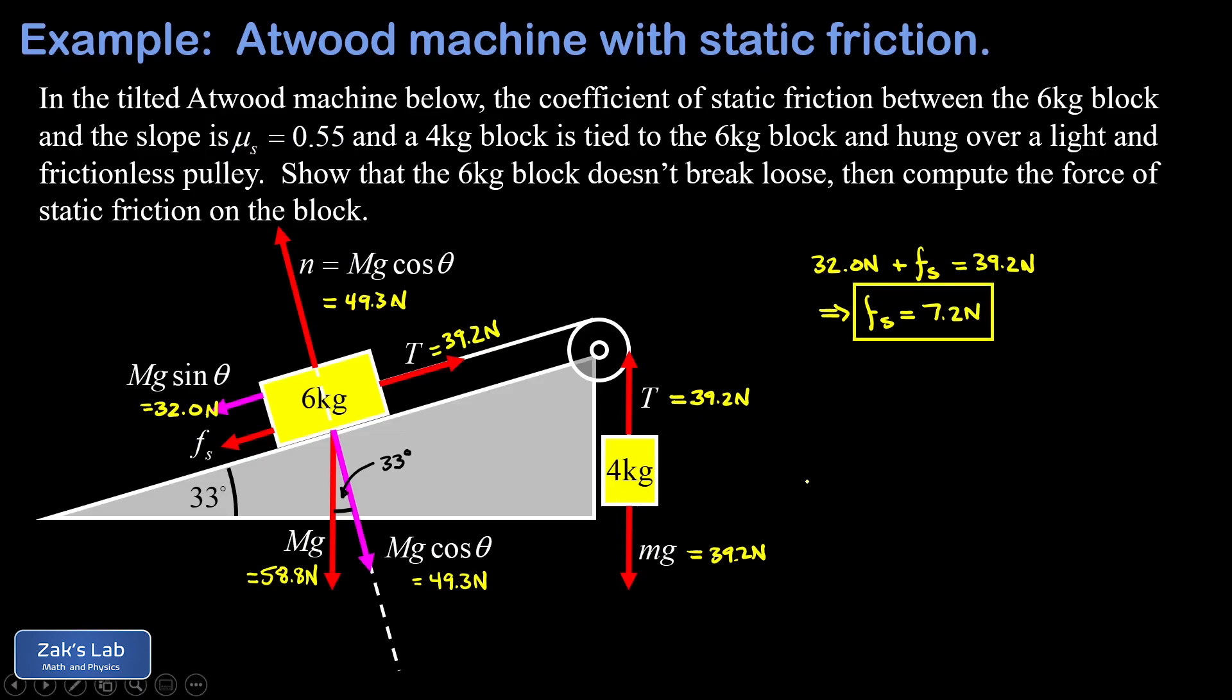But we're still not done with the problem because we still haven't shown that it's possible to have a static friction force this big. What we need to do is investigate what the maximum static friction force is and make sure this is less than that. So the maximum possible static friction force, that's what's related to the normal force by our static friction coefficient. So we plug in the numbers here and we have a static friction coefficient of 0.55 and a normal force of 49.3 newtons. This gives us a maximum possible static friction force of about 27.1 newtons.